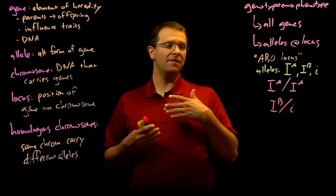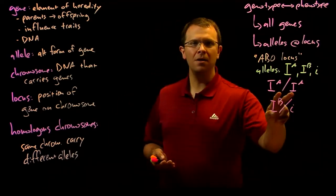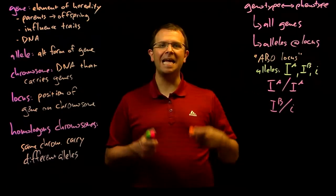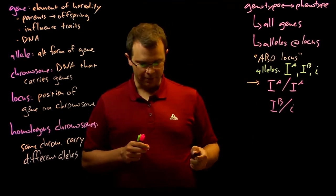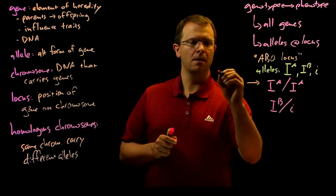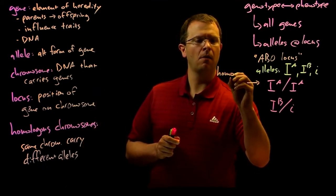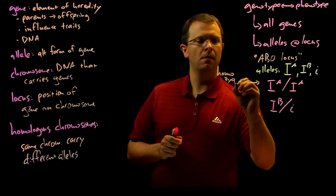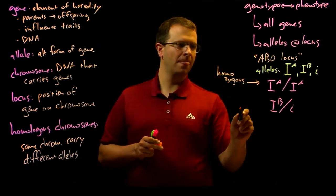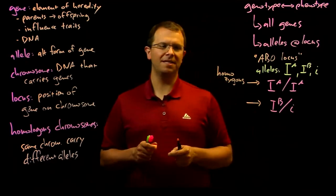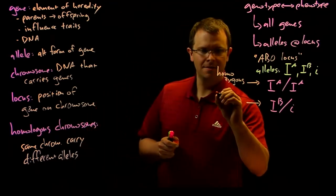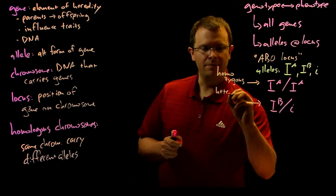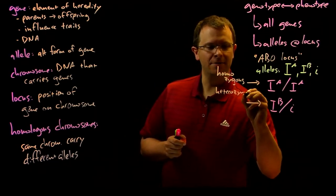And if a person has two copies of the same allele, we say that that person is homozygous at that locus. And if a person has two different alleles at that locus, we say that person is heterozygous.